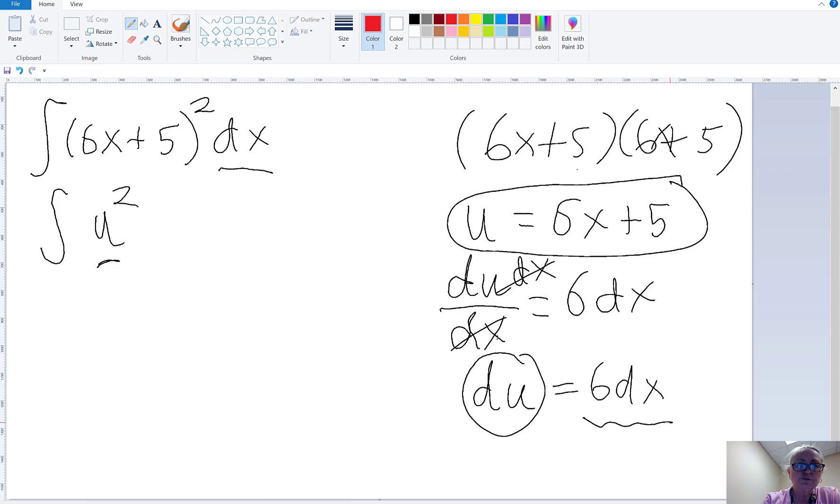So I'm going to insert a 6 here so that I have a 6dx, but if I multiply by 6, I also need to divide by 6. So what I do is I put a 1/6 out here, because think about that. What's 1/6 of 6? Well, that's just 1, so I'm not changing the value. I'm just putting a 1/6 here and a 6 in here so that I can substitute.